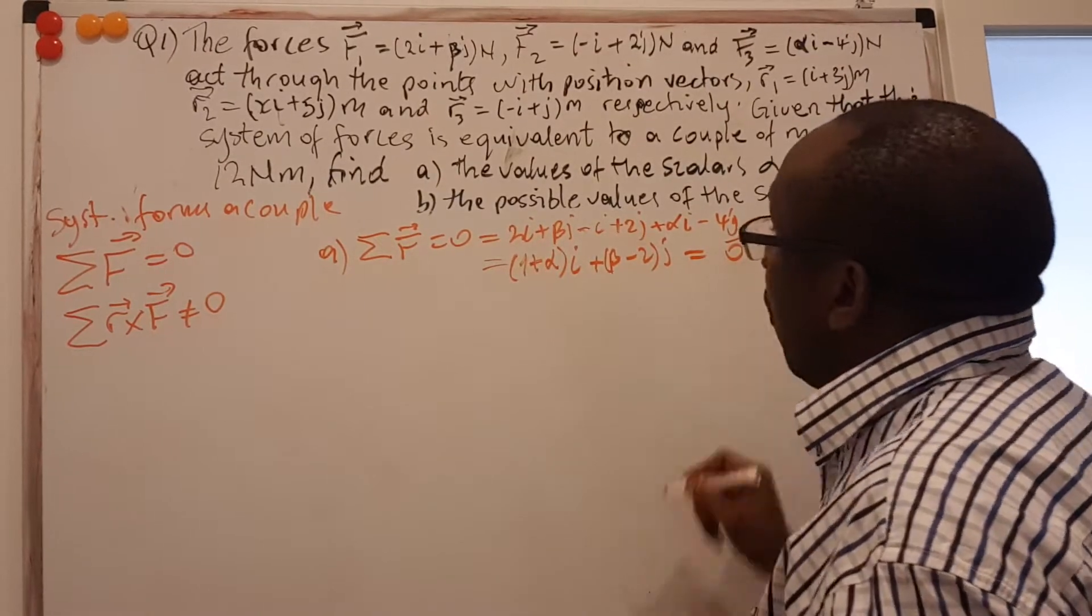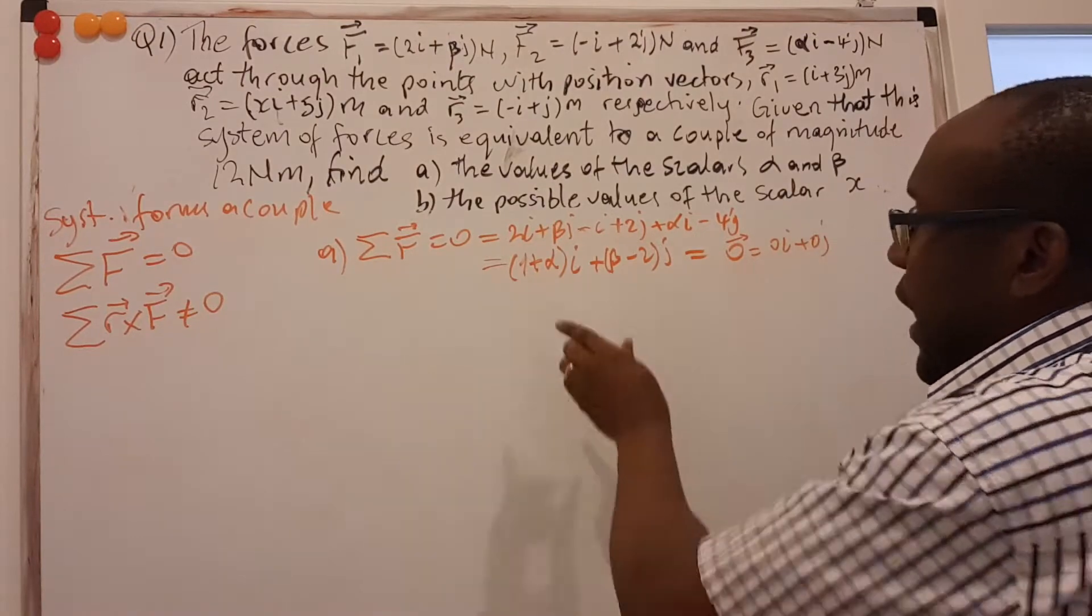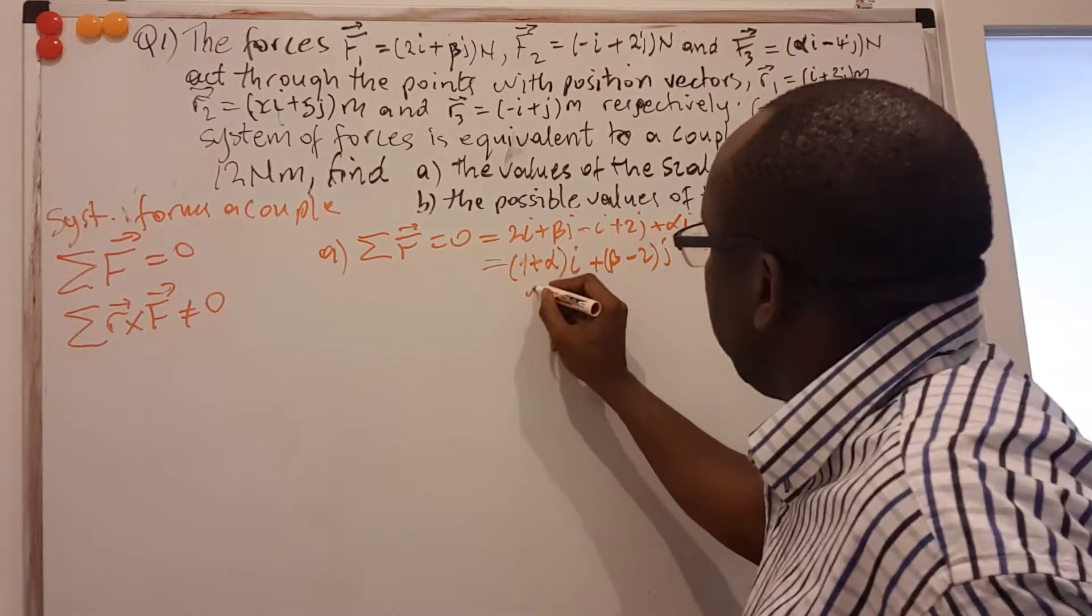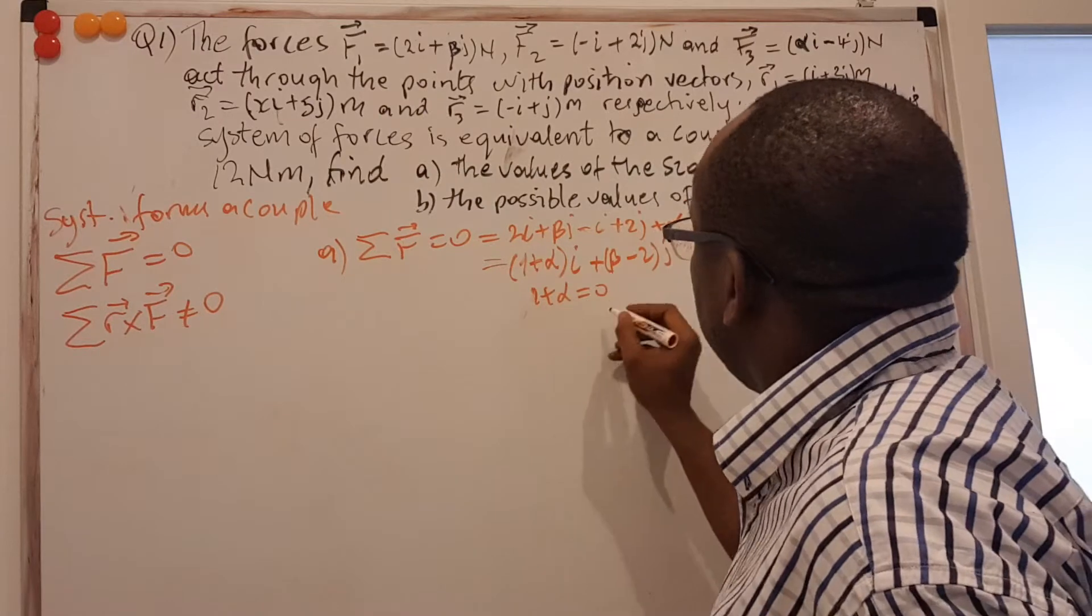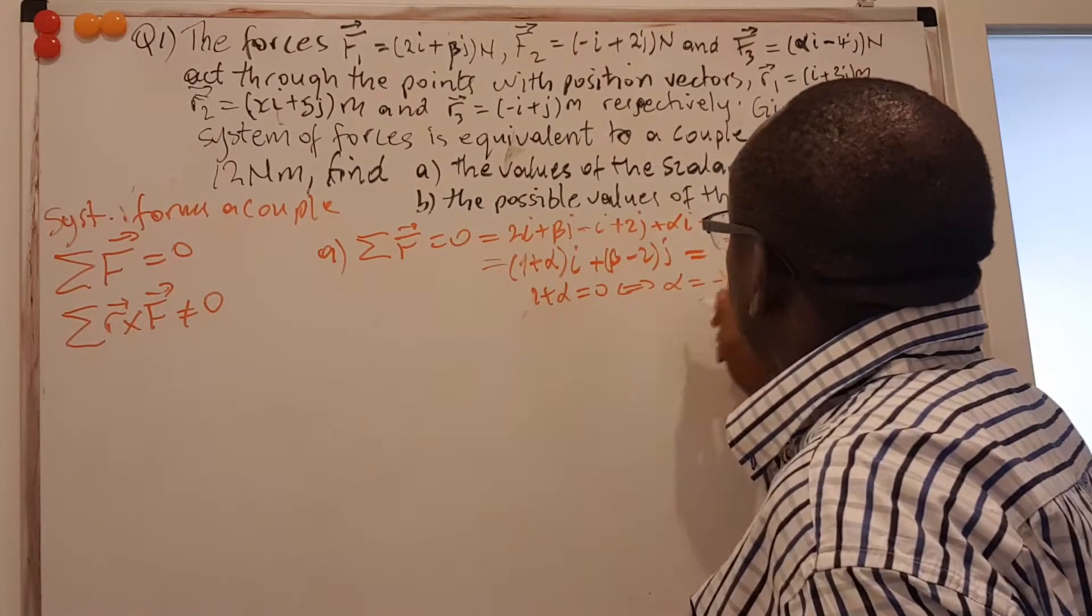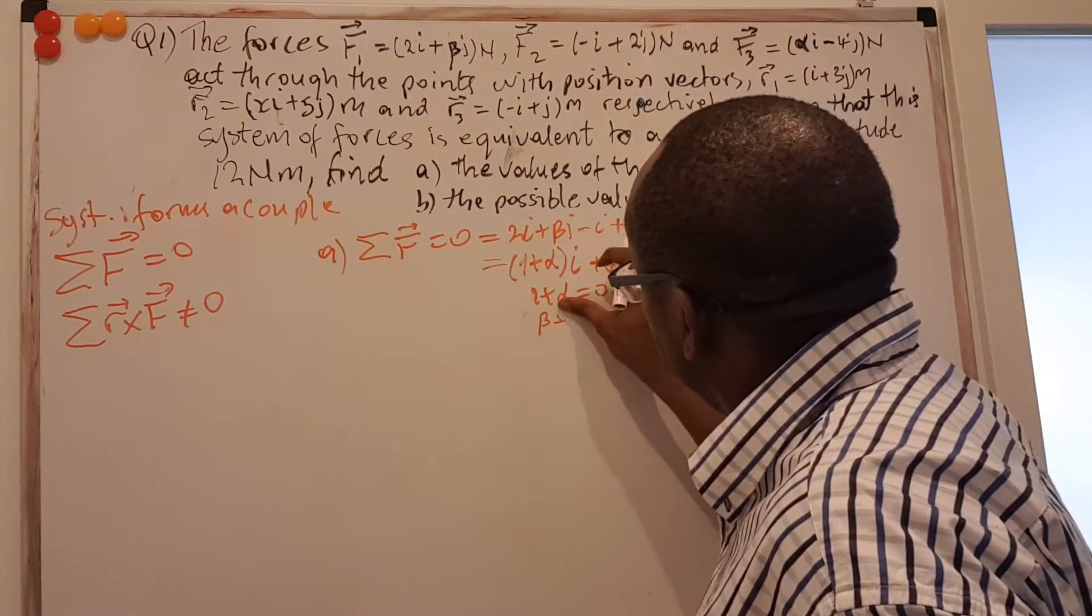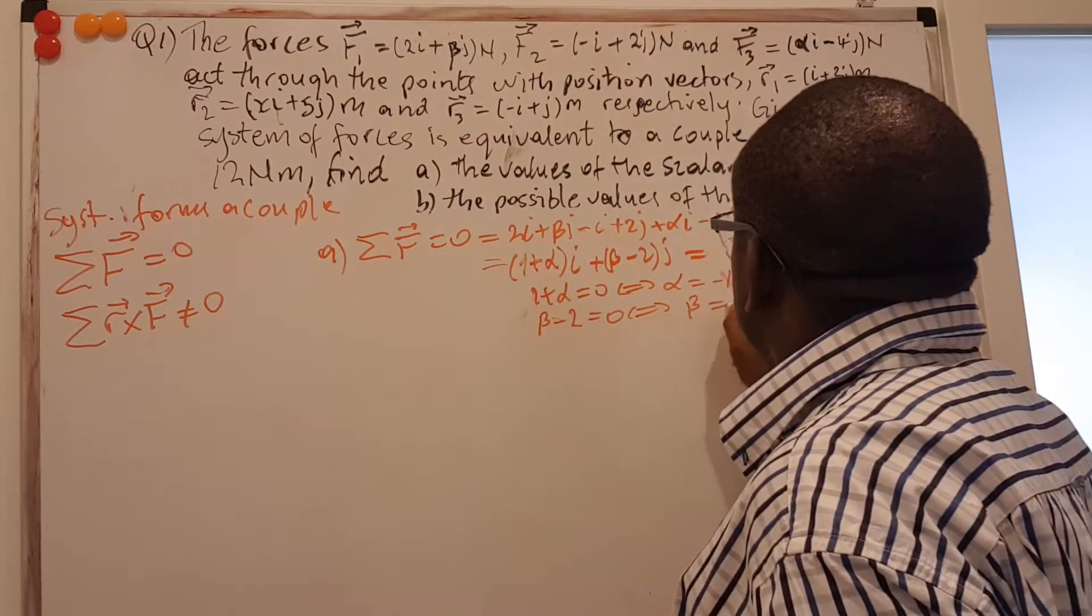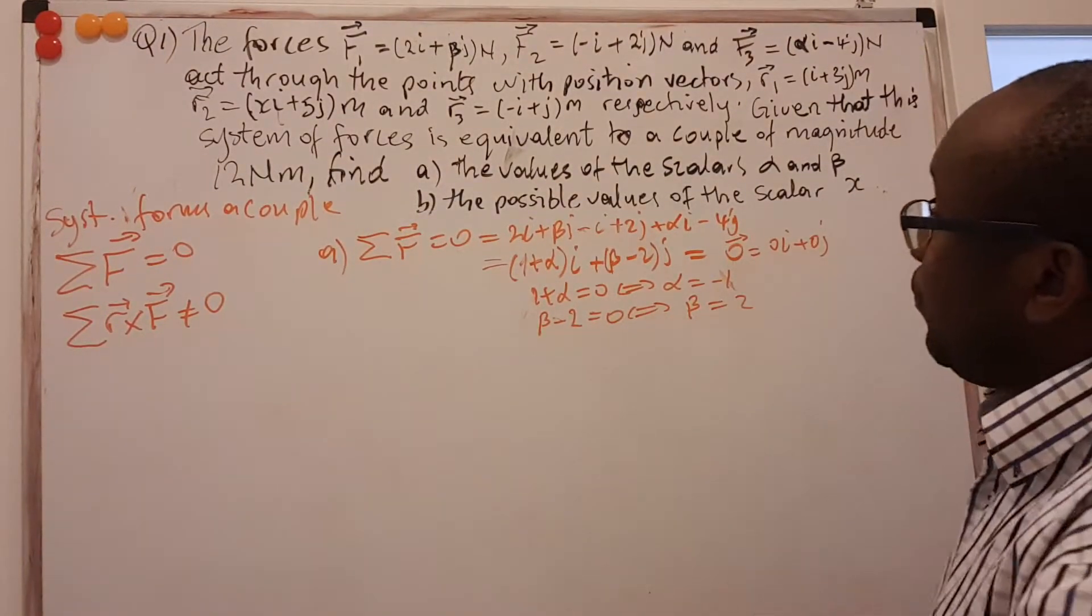This should be equal to zero. Actually, this we'll call like a zero vector. The idea of this is that you see this as 0i + 0j. And if these two are equal, it means that the corresponding coefficients should be the same. That means 1 + α should be equal to zero. And this implies that α is equal to minus 1. Then β - 2 is equal to zero. That means β is equal to 2. So our α is equal to -1 and β is 2. That's done.